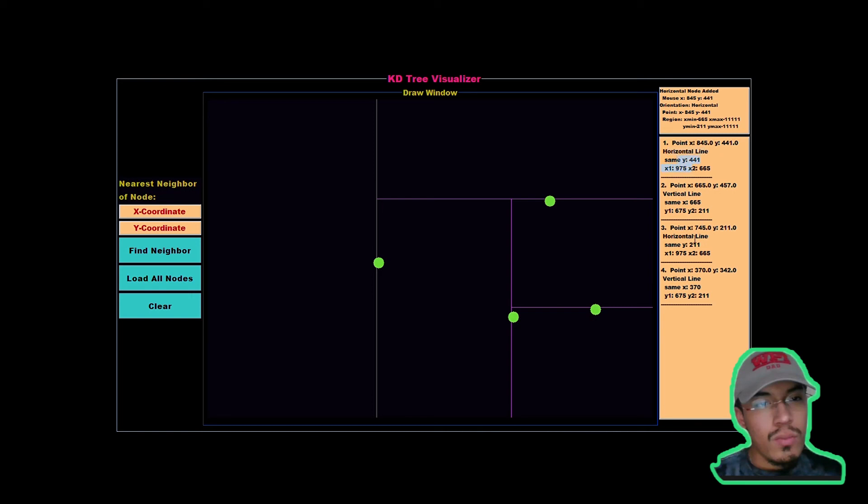It is important to notice that these are not in the order that they were inserted in, but they are in the order from left to right in the KD-tree structure.